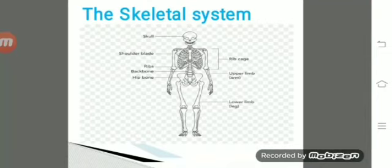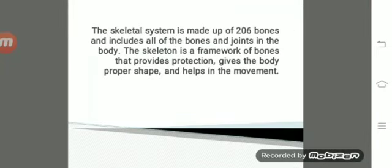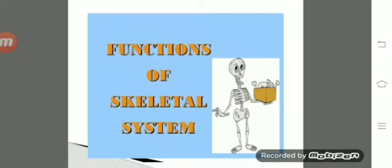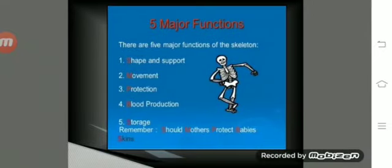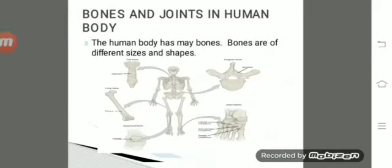Lesson number two: Human Skeleton System. The skeletal system is made up of 206 bones and includes all the bones and joints in the body. The skeleton is a framework of bones that provides protection, gives the body proper shape, and helps in movement. The five major functions of the skeleton are: giving shape and support, providing movement, protection, blood production, and storage.